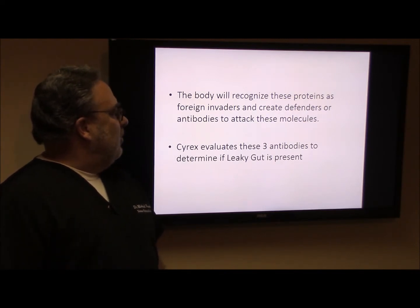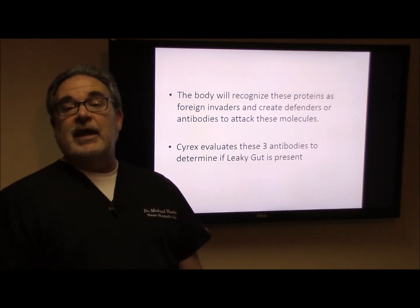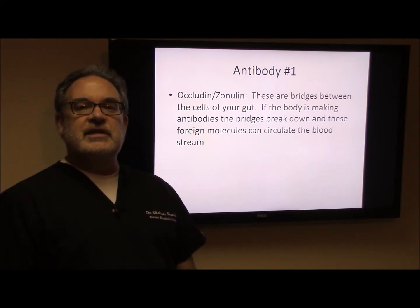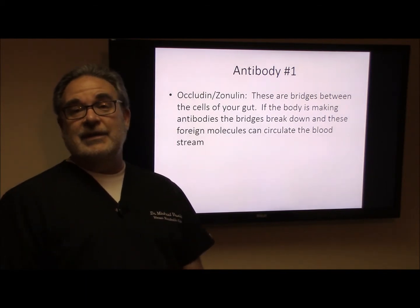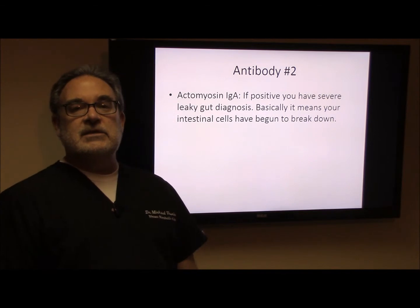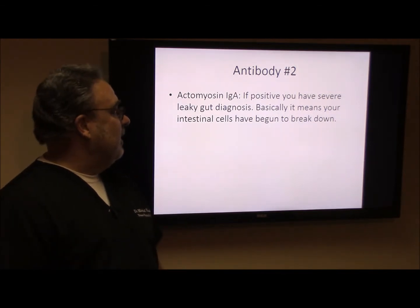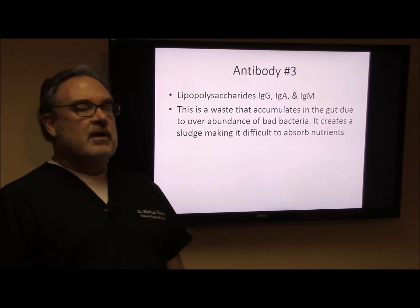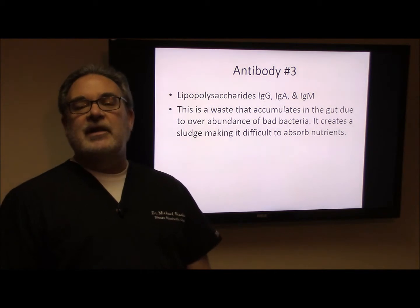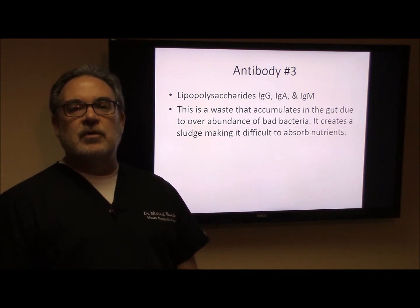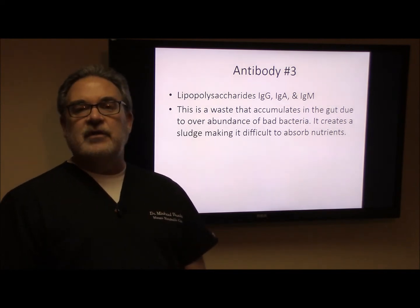When we use Cyrex Labs, we are evaluating three antibodies to determine if leaky gut is present. The first antibody is occludin and zonulin — these are bridges that form between the cell walls. When there is degradation of these bridges, we know leaky gut has begun to occur and these molecules begin to circulate through the bloodstream. The second antibody we test for is actomyosin IgA, and when this is present it means there is severe cell wall destruction — the intestinal cell walls have really begun to break down, a much more serious condition that takes longer to fix. The third antibody is an antibody to lipopolysaccharides, which is basically a film layer over the mucosa of the cell membrane that prevents nutrients from passing through the cell wall. Any one of these, if present, suggests a leaky gut diagnosis.